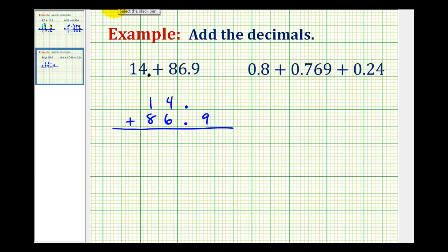If we'd like we can add a zero in the tenths place value for fourteen so everything lines up nicely. Notice how we have the tens place value, the ones place value, and the tenths place value lined up correctly. Now we'll bring the decimal down into our sum and add as we normally do.